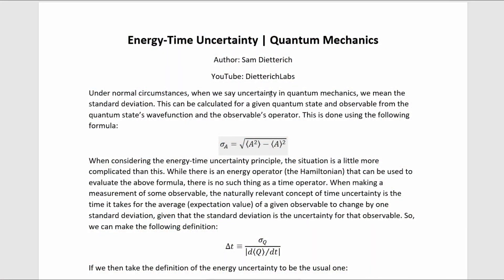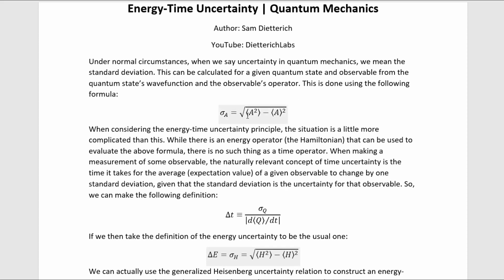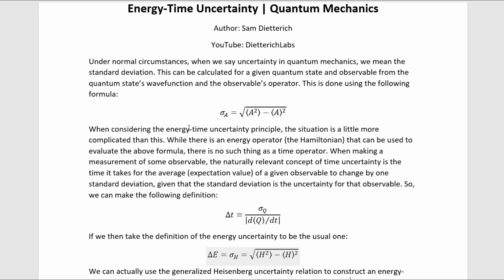Under normal circumstances, when we say uncertainty in quantum mechanics, we mean the standard deviation. This can be calculated for a given quantum state and observable from the quantum state's wave function and the observable's operator. This is done with this formula here, where the brackets mean expectation values.